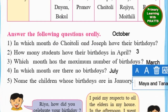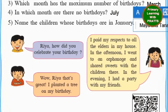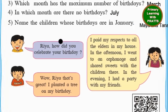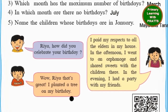Now let's read what the children are saying. Since this is a birthday chart, these children are telling us how they celebrated their birthday. Ria says: I paid my respects to all the elders in my house. In the afternoon I went to an orphanage and shared sweets with the children there. In the evening I had a party with my friends. Another child says: I planted a tree on my birthday. They are telling us how to celebrate your birthday by doing something good, helping others and helping our planet.